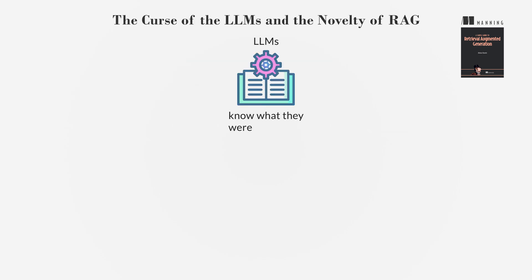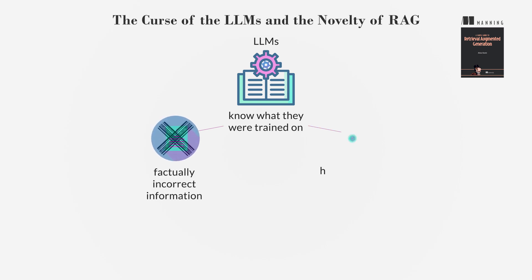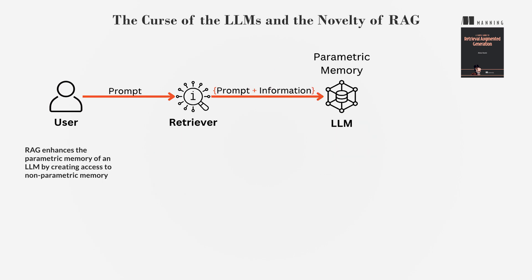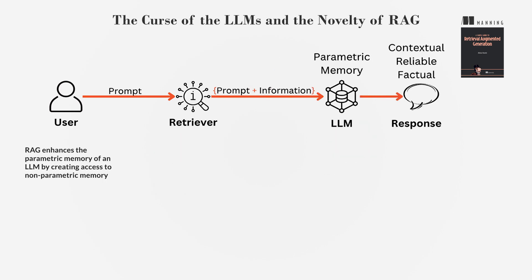LLMs only know what they were trained on, making them prone to generating factually incorrect information or hallucinations. These limitations led to the development of RAG, which can enhance LLMs with up-to-date, accurate information even on topics they weren't trained on.